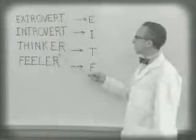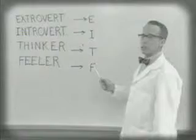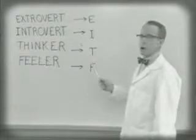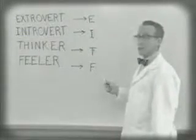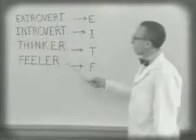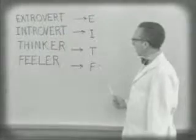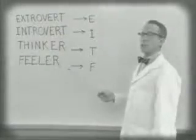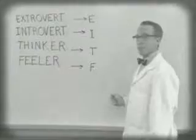The thinker, or T, makes decisions through cause and effect. The feeler, or F, uses the associative process in decision making.